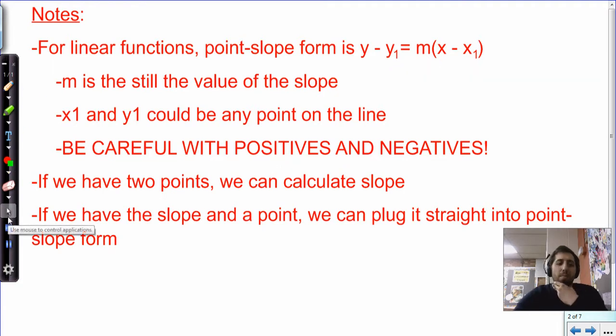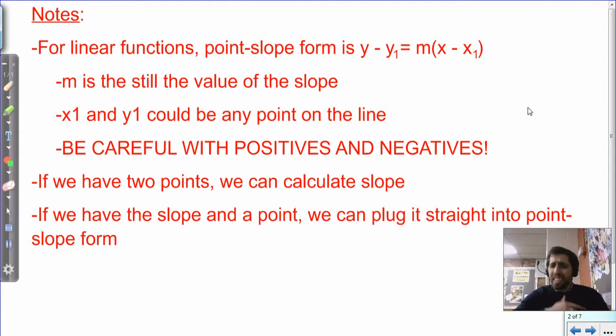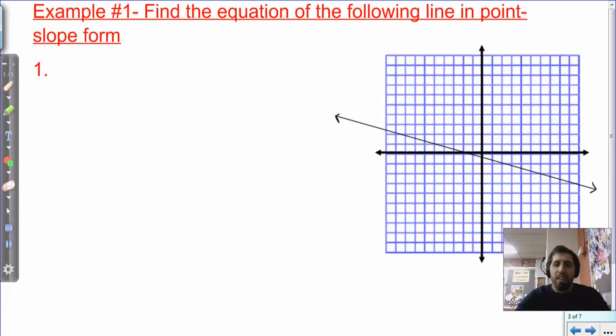Why is point-slope form useful? Well, just as before, if we have two points, we can calculate slope. That's our slope equation: m equals y2 minus y1 over x2 minus x1, the change in y over the change in x. But with slope-intercept form, we have to solve for the y-intercept by plugging in a point. Right now, we can just plug in a point, x1, y1, and we've got the form already written. You already got your equation. So that's useful, and that's a lot quicker sometimes. So let's see what this looks like in practice.